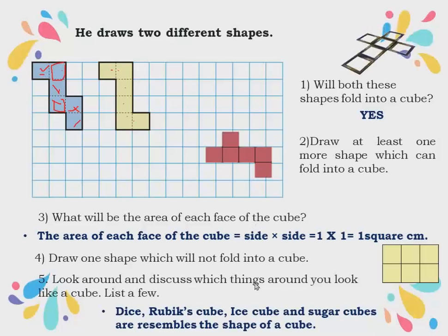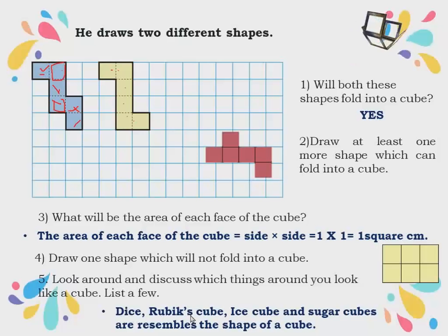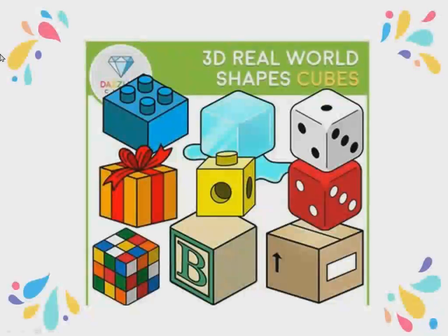Fifth question: look around and discuss which things around you look like a cube — list a few. In real life, examples include dice, which you use when playing Ludo or Snakes and Ladders; Rubik's cube, a game with squares of all sides and different colors; ice cube; and sugar cube — all these resemble the shape of a cube. These are 3D real-world shapes — Rubik's cube, dice, gift box, ice cube.